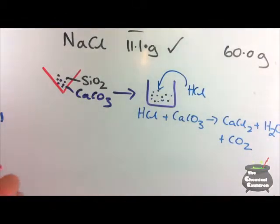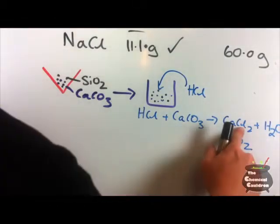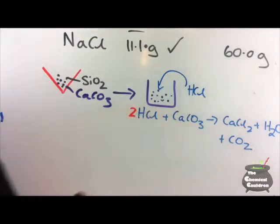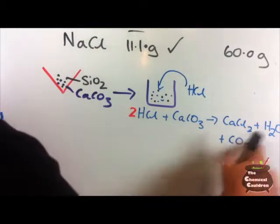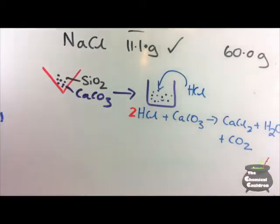And so if we balance that equation, we can see there's two chlorines, so we needed two there. We've got two hydrogens, two hydrogens. We've got three oxygens, two, three oxygens. One calcium, one calcium. So that's that equation balanced.